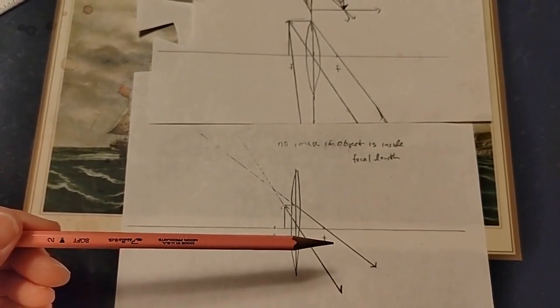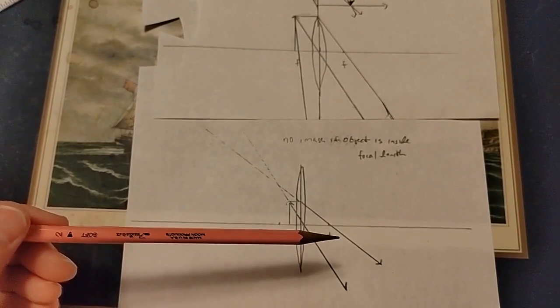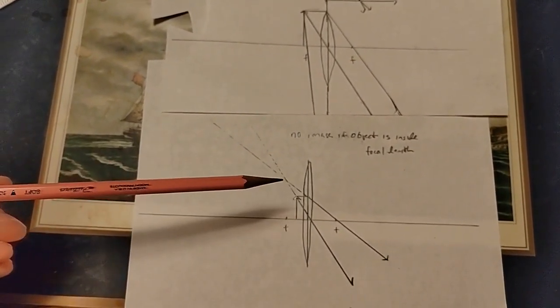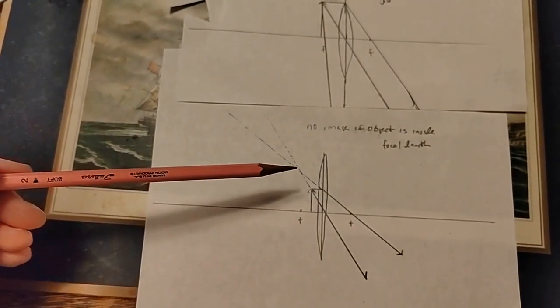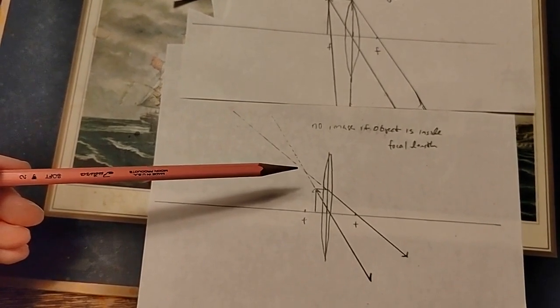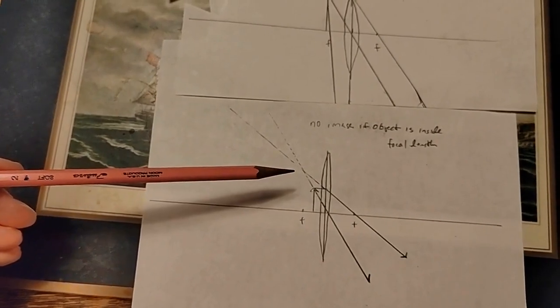It turns out there is another kind of image, not one you could put on a screen, called a virtual image. And we can find it by backtracking our rays and seeing that they appear to somebody over here, as if they had diverged from this point. We'll see why that's useful in another video, but it's definitely not going to get us a picture that we can record on film or a sensor.